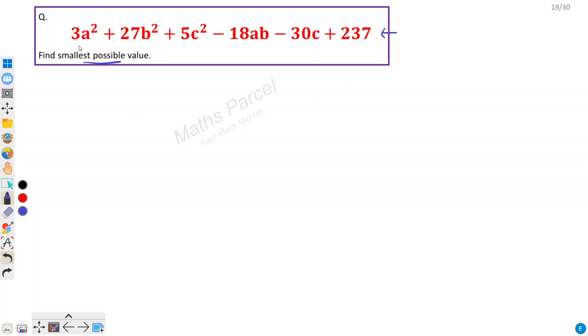Now this expression is 3a² + 27b² + 5c² - 18ab - 30c + 237.